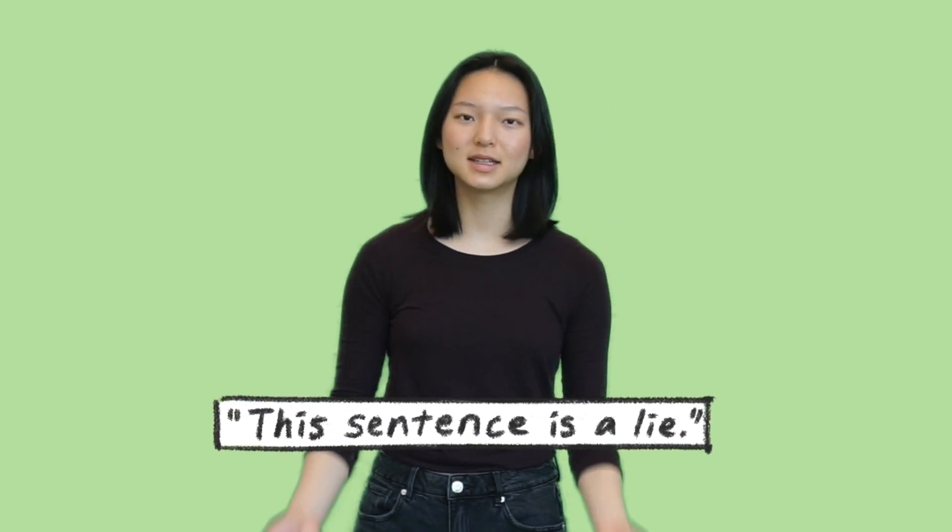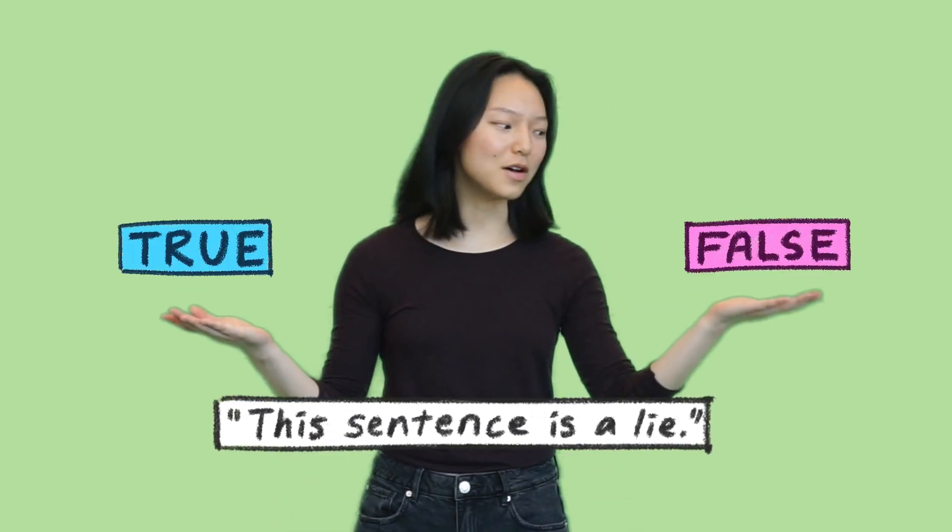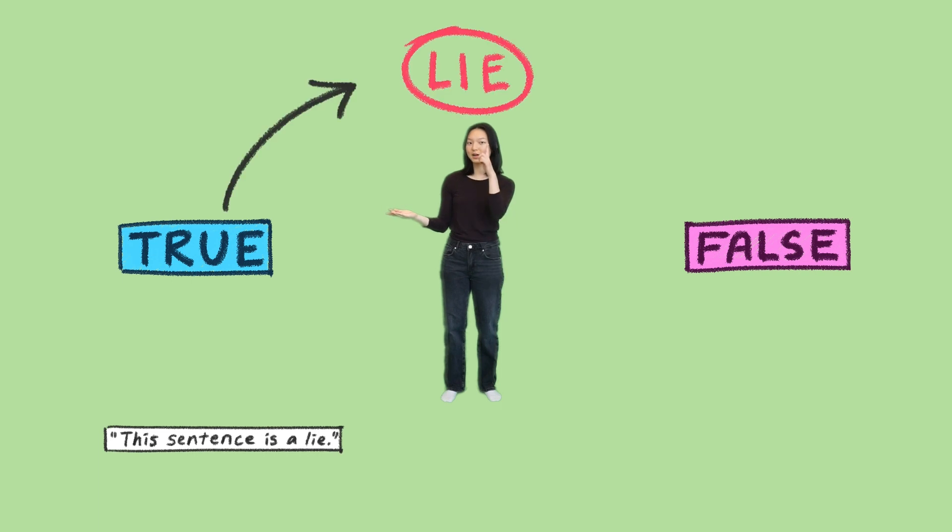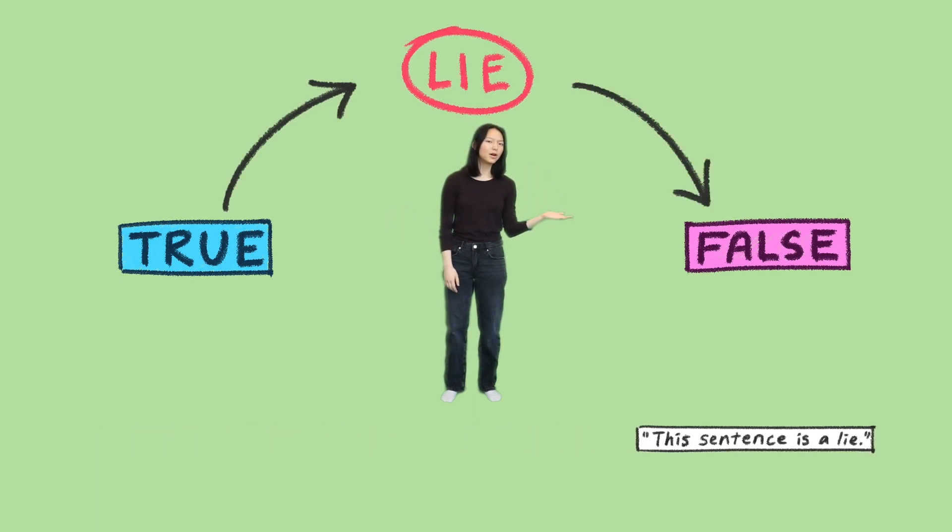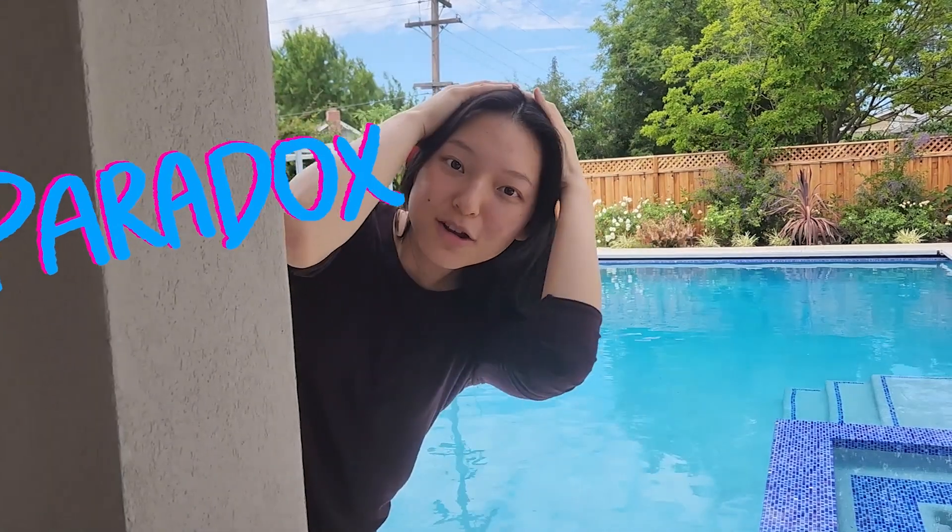Consider the statement, this sentence is a lie. Is it true or false? If it's true, it's a lie, so it's false. But if it's false, then it's not a lie, so it's true?